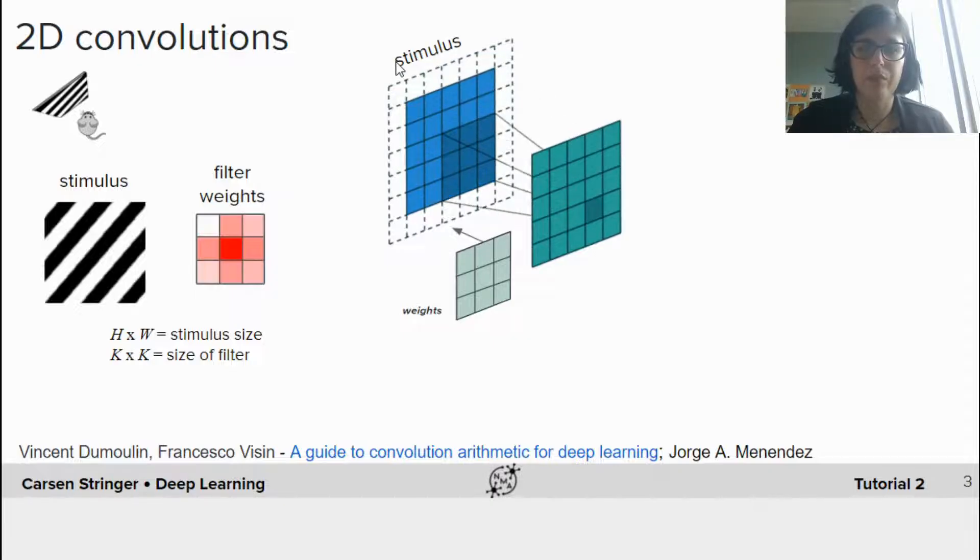And another parameter of the convolution computation is the stride. So how often the convolution is computed along the stimulus dimension. In this case, we used a stride of 1. We're sampling every single position here. But we can increase the stride and in turn have fewer output units.